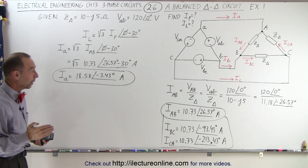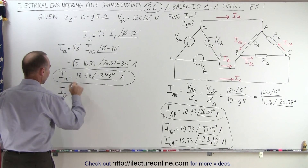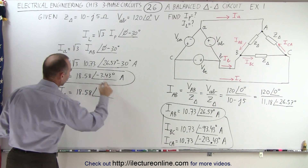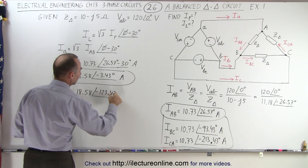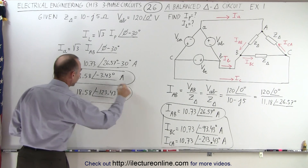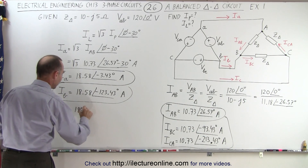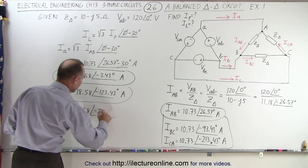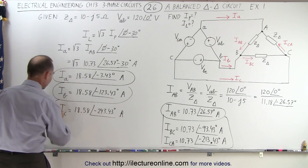Now we're ready to write down the line currents for B and C. Ib is equal to the same magnitude of 18.58, with a phase angle of minus 3.43 minus 120, which is minus 123.43 degrees, in terms of amps. And finally, Ic is equal to 18.58 with a phase angle of minus 243.43 degrees, in terms of amps.